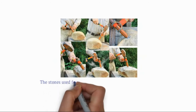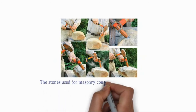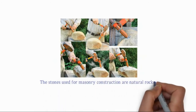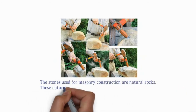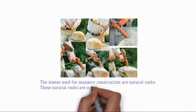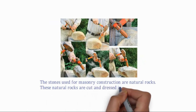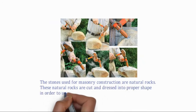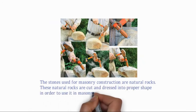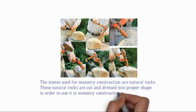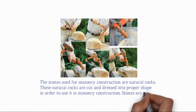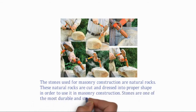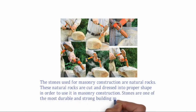The stones used for masonry construction are natural rocks. These natural rocks are cut and dressed into proper shape in order to use them in masonry construction. Stones are one of the most durable and strong building materials.